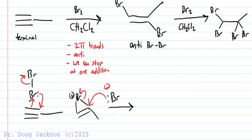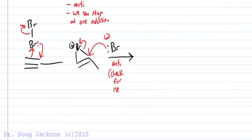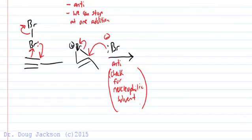This adds in an anti fashion. We also need to check for a nucleophilic solvent, because if we do have methanol or ethanol or another nucleophilic solvent, it can add since it's in solution. The bromide ions are very rare compared to the solvent molecules. There are proximity effects that give bromine a little bit of an advantage, but the methanol or solvent could easily add at this point.